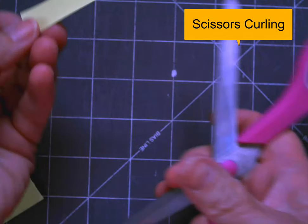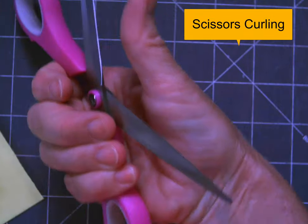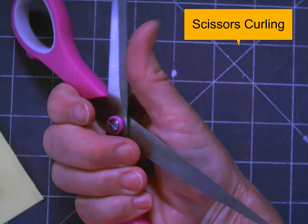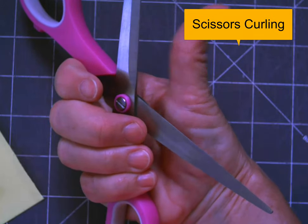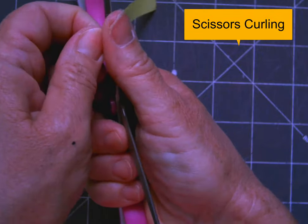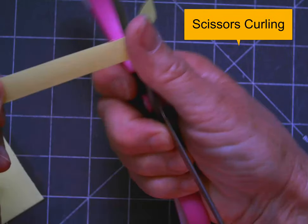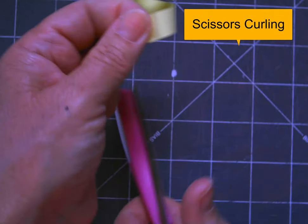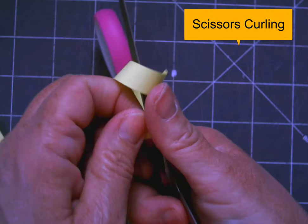The other way you can do it is scissors curling. This is just like if you're curling ribbon. You want to hold the paper between your thumb and the scissors blade. Pretend there's jelly on one side and you're trying to scrape that jelly off, and that's how you get a scissors curl.